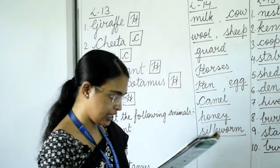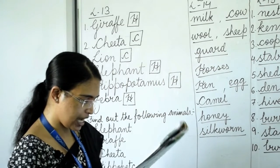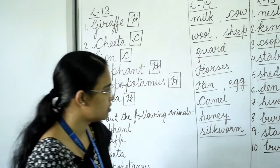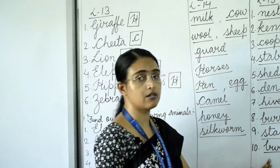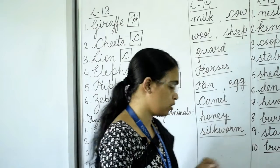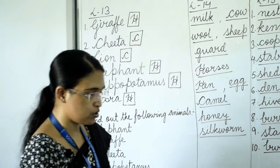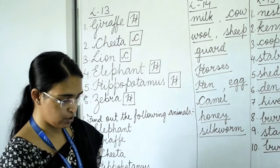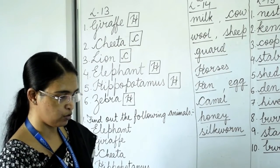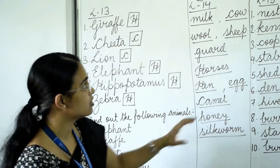Number seven: a bee builds its own hive — bees live in a hive. Number eight: a rabbit lives in a burrow. Number nine: pigs live in a sty — write sty. Number ten: a snake also lives in a burrow. Write the names of the homes of animals in this way.